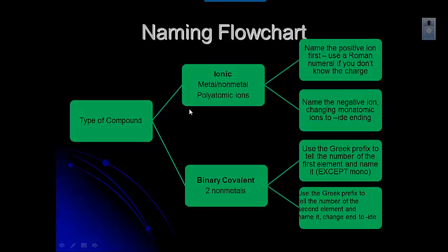Then we want to give the name of the negative ion. If it's a polyatomic ion, always keep the name the same. We never change the name of a polyatomic ion. If it is a monatomic ion, meaning one that we have to look up on the periodic table, then we're going to change the end of that to an IDE ending. So chlorine to chloride, sulfur to sulfide, and so on.